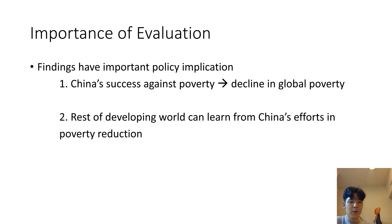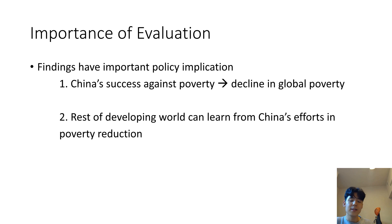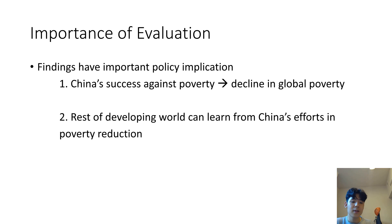Now why is this evaluation important? This finding has very important policy implications because China's success against poverty ultimately leads to a decline in global poverty, considering how big they are as a country. Secondly, the rest of the developing world can learn from China's efforts in this poverty reduction program. They are able to model future programs after this, see what works and what doesn't, and hopefully replicate or even modify it and go past what China has done.